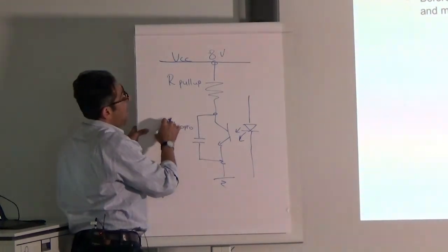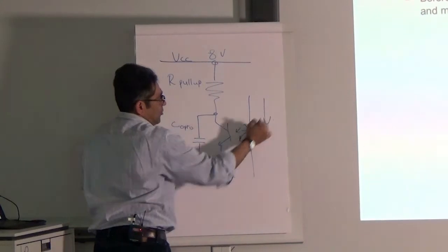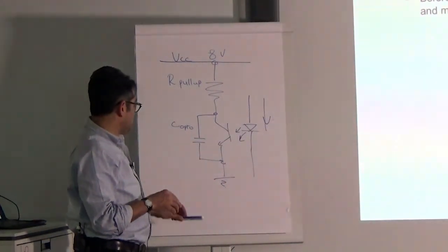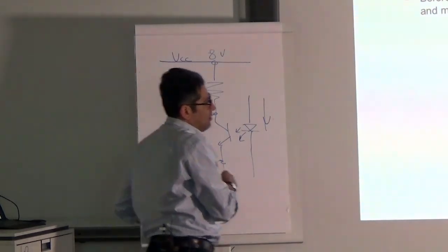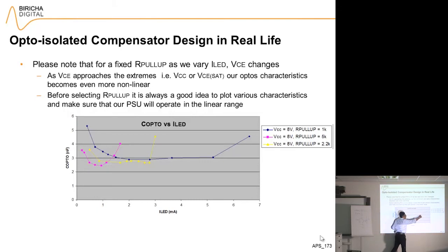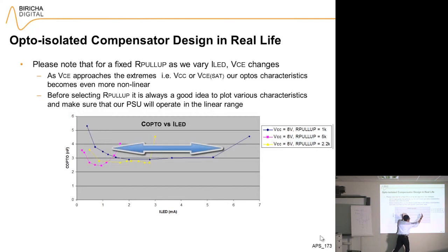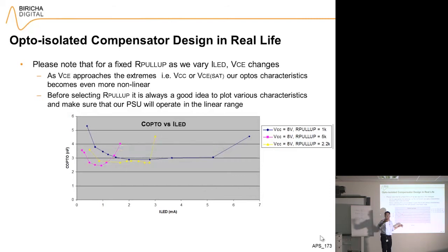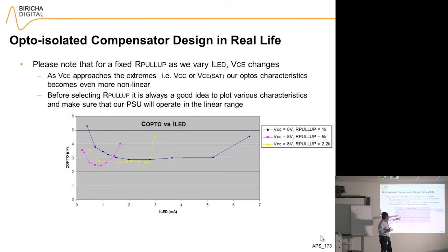The results are very interesting. If I use a 1k pull-up resistor, I get almost a constant C_opto for a range from about 1.5 milliamps to about 5 milliamps — a massive range that is very linear and doesn't change. That tells me that if I use a 1k resistor for this particular power supply, when the LED current is being regulated, the bandwidth of the opto is going to remain relatively constant, so it's not going to mess up my loop.